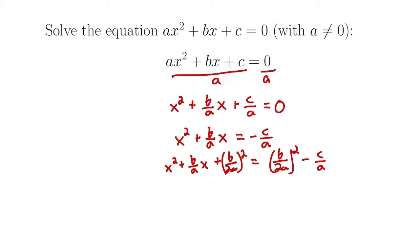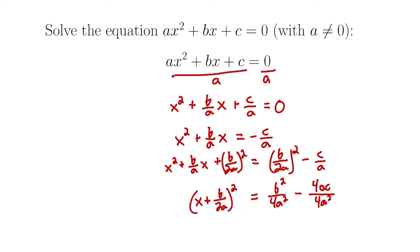On the right-hand side we multiply things out, getting b squared over 4a squared. To get a common denominator of 4a squared, we multiply c over a by 4a in both numerator and denominator, giving 4ac over 4a squared. On the left side we have our perfect square trinomial, which factors as x plus b over 2a quantity squared. You can verify this by FOILing out x plus b over 2a times x plus b over 2a to get x squared plus b over a times x plus b over 2a quantity squared.